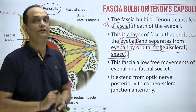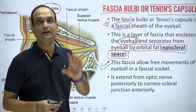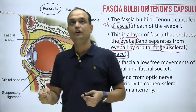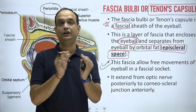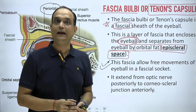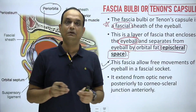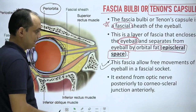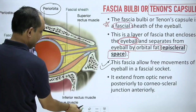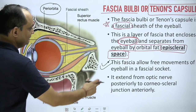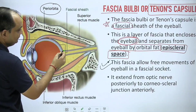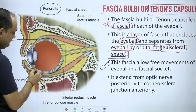This fascia allows free movement of the eyeball in the facial socket — that is the important function of the tenons capsule. It makes a facial socket inside which the eyeball moves. For movement of the eyeball, the extraocular muscles go and insert into the eyeball, so this fascia is punctured by the recti and oblique muscles. It extends posteriorly from the margins of the optic nerve attachment, and anteriorly reaches up to the limbus — the corneoscleral junction.